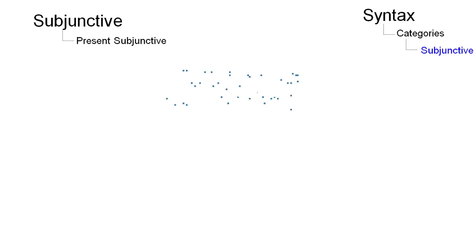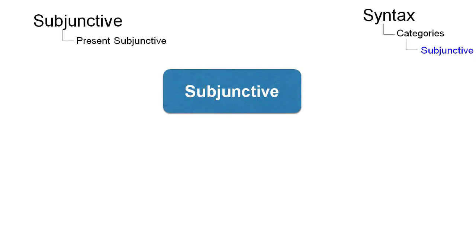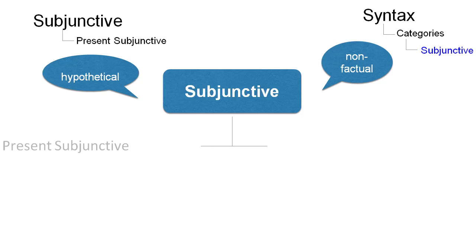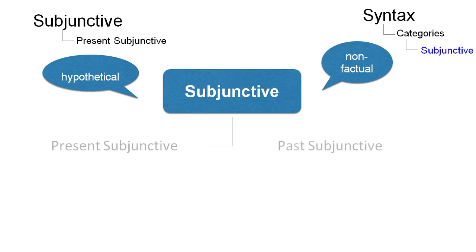The subjunctive is a form of a finite verb that is mostly used in hypothetical or non-factual cases, but also in special kinds of finite dependent clauses. In present-day English there are two types of subjunctive: the present subjunctive and the past subjunctive.